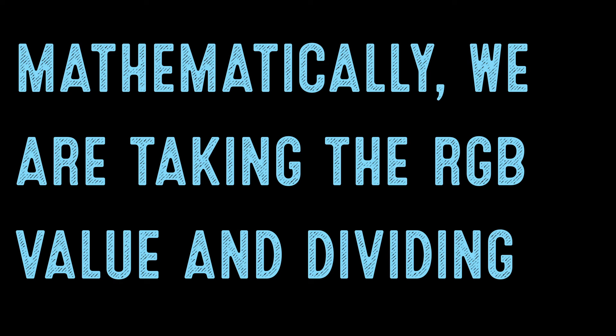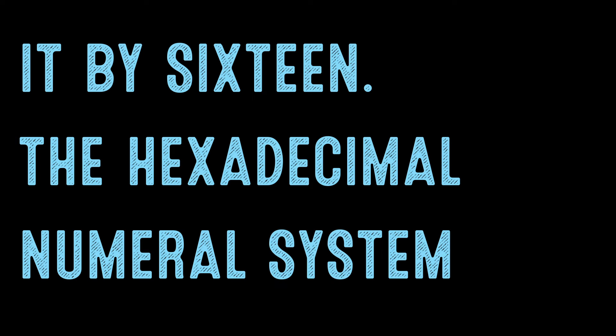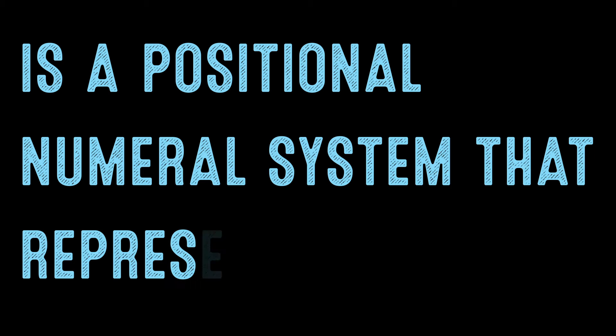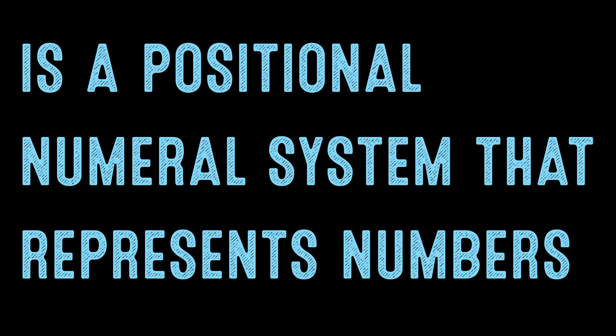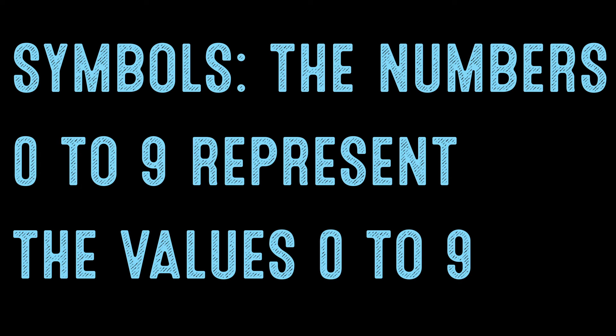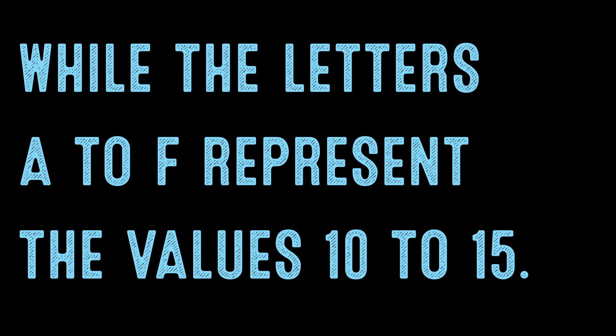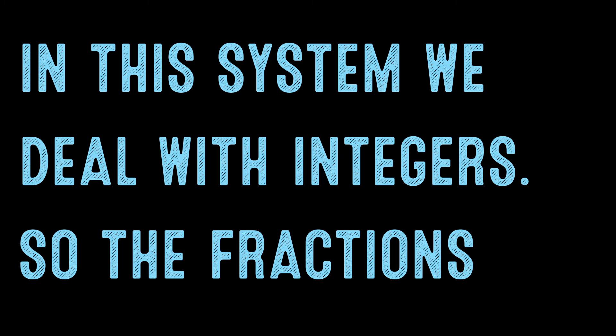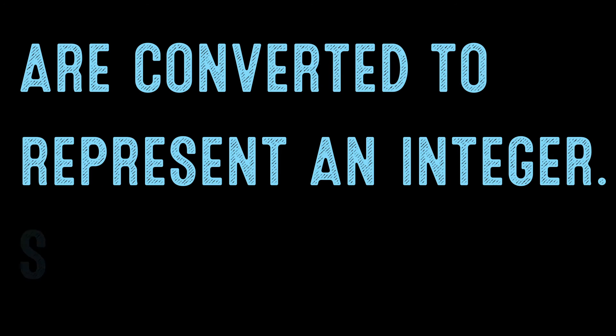Mathematically, we are taking the RGB value and dividing it by 16. The hexadecimal numeral system is a positional numeral system that represents numbers using a radix or base of 16. There are 16 distinct symbols. The numbers 0 to 9 represent values 0 to 9, while letters A to F represent values 10 to 15. In this system, we deal with integers, so fractions are converted to represent an integer.